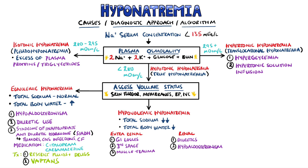The mechanism in hypoaldosteronism is that the renin-angiotensin-aldosterone system and antidiuretic hormone system may become activated, but due to the lack of aldosterone, little sodium is reabsorbed, while more free water is reabsorbed as a result of the action of the antidiuretic hormone, also known as vasopressin. It causes aquaporin-2 channels to be inserted into the membranes of the principal cells in the distal tubule and collecting duct, allowing free water to pass from the urine back into the cells and ultimately back into the blood.